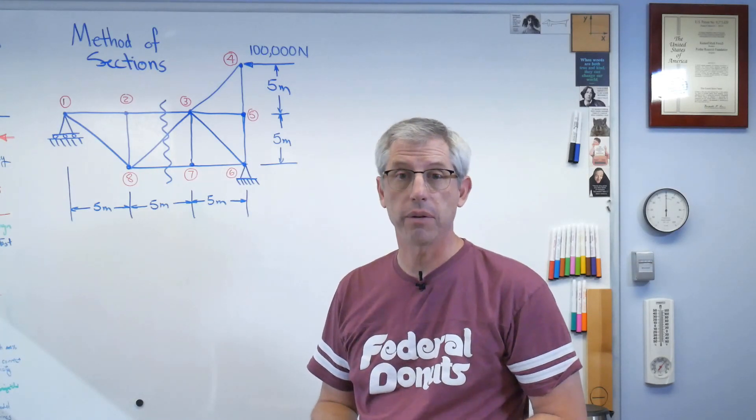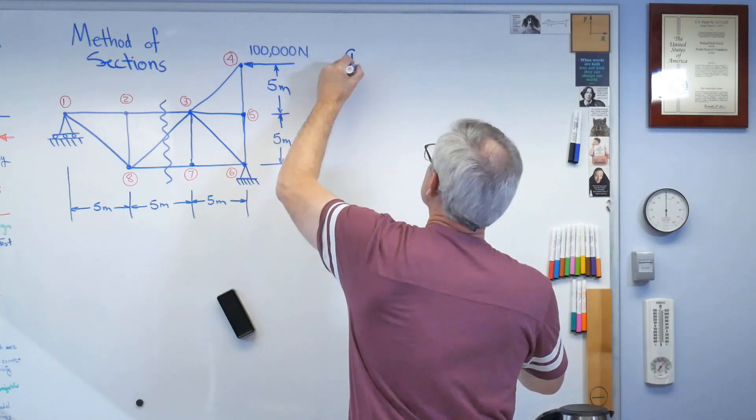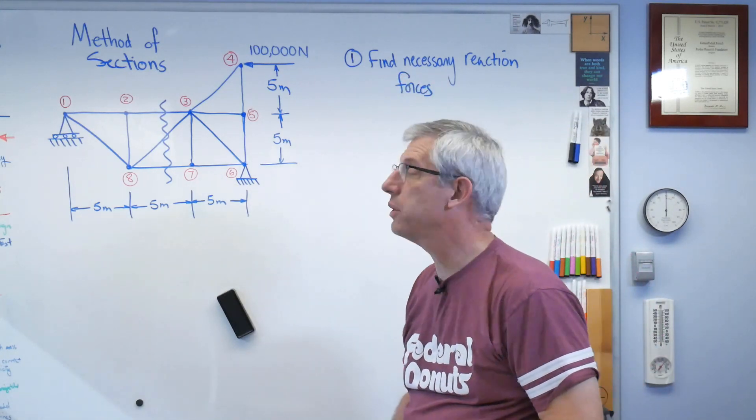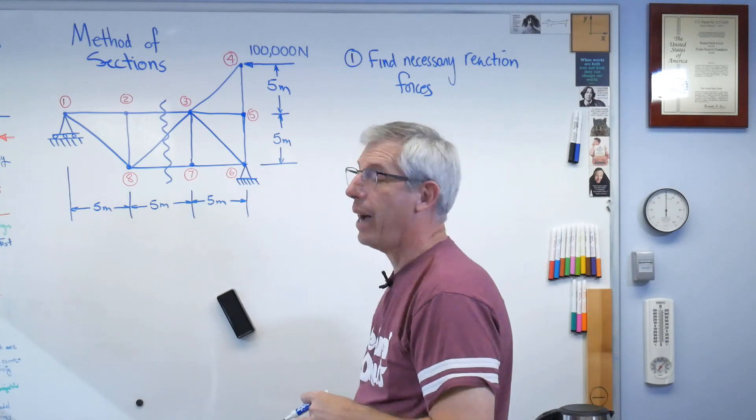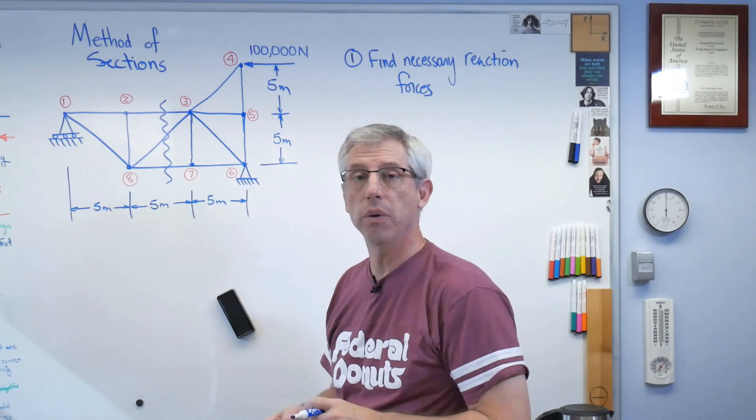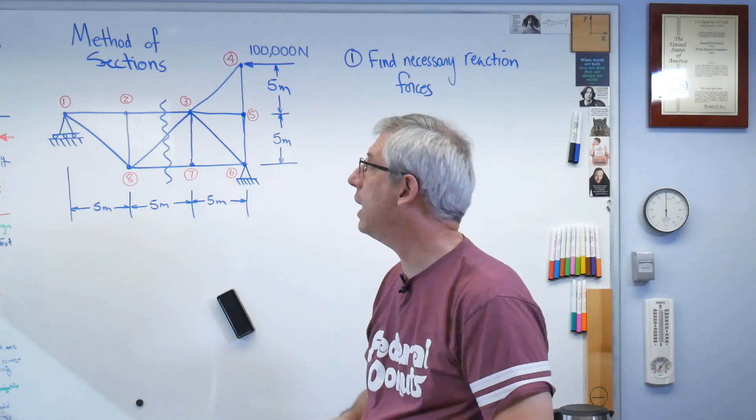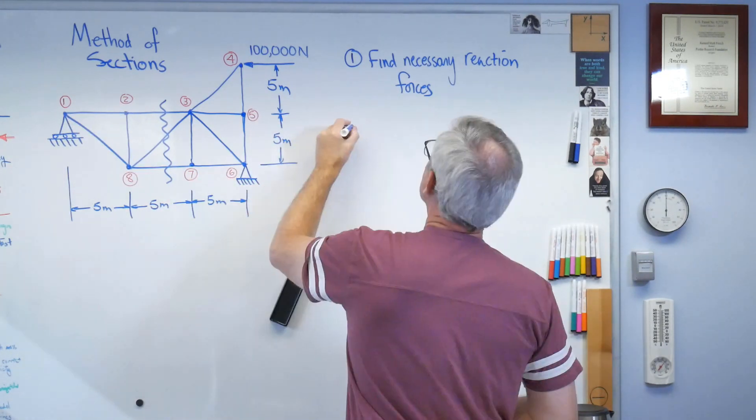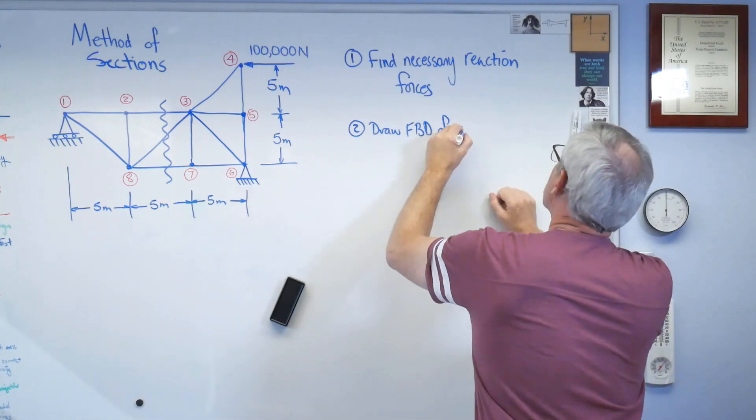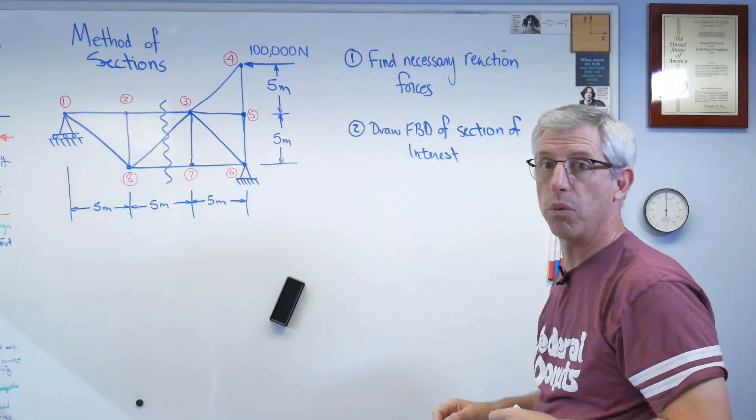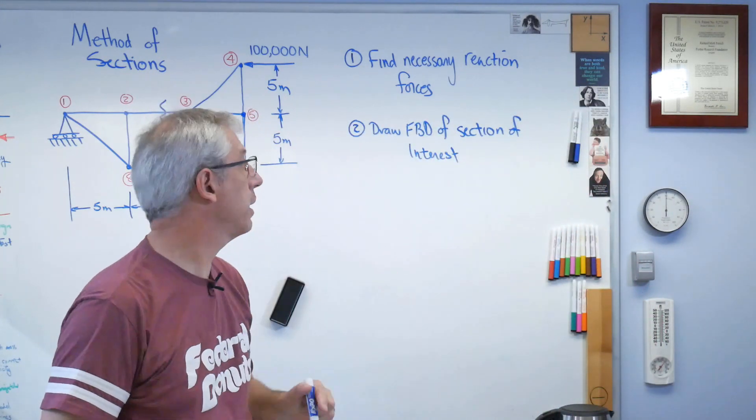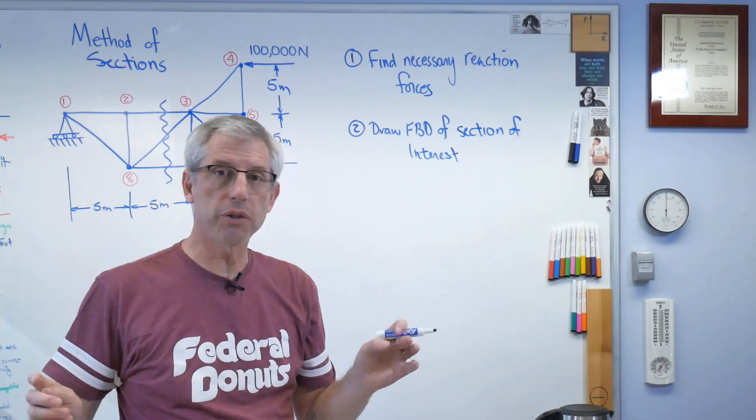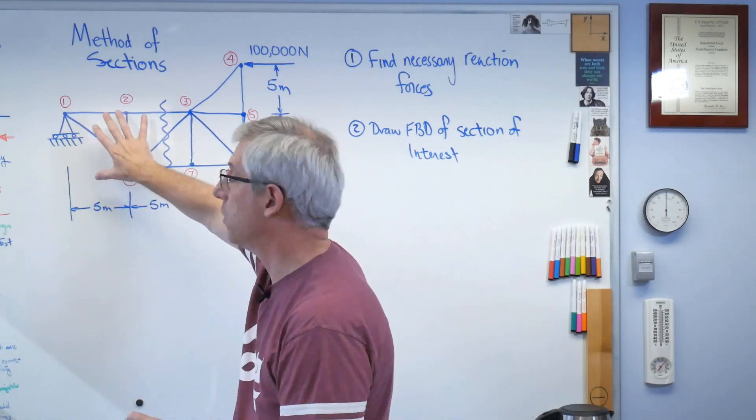Let's go over the steps for the method of sections. Step one: we're going to find the necessary reaction forces. Because of the way this is set up, I probably only need the reaction force on the part of the structure that I'm retaining. Since the cut is right there, I'm going to retain this side. Next thing we're going to do is draw a free body diagram of the section of interest. Draw a free body diagram of only the part we care about, not the whole structure.